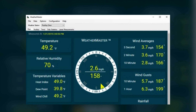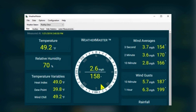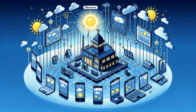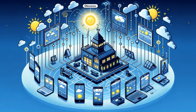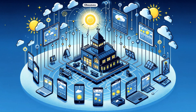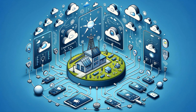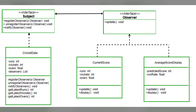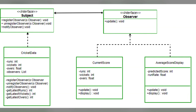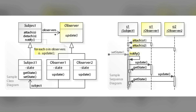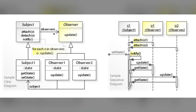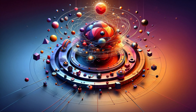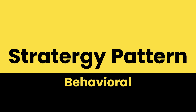Technically, think of it like a weather monitoring application. The weather station gathers data and keeps sending updates to various display elements like current conditions, forecast, and subsequent weather. All of the weather data keeps changing and the receivers keep observing what the weather patterns are going to be. Use this pattern whenever a change to one object requires changing other objects, and the number of objects to change is unknown or dynamic.